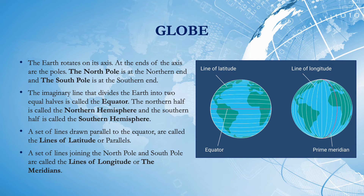Lines drawn parallel to the equator are called the lines of latitude or parallels. A set of lines joining the north pole and south pole are called the lines of longitude or the meridians.